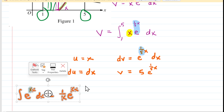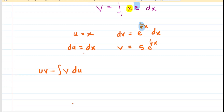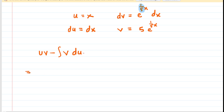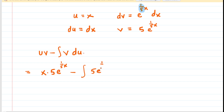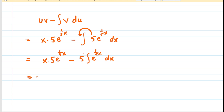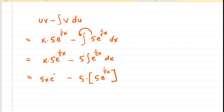Now we'll remind ourselves of the integration by parts formula and plug those components in. The integral becomes u times v — that's x times 5e to the one-fifth x — minus the integral of v times du, which is 5e to the one-fifth x times dx. We can pull the 5 outside of the integral, then integrate e to the one-fifth x again using the shortcut to get 5e to the one-fifth x. Writing this more cleanly: 5xe to the one-fifth x, and we have 5 times 5 which makes 25e to the one-fifth x. Now we are ready to plug in our bounds.